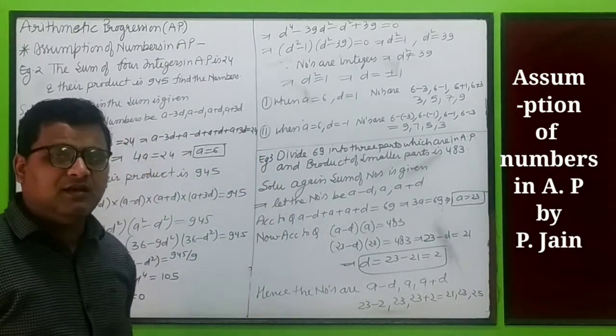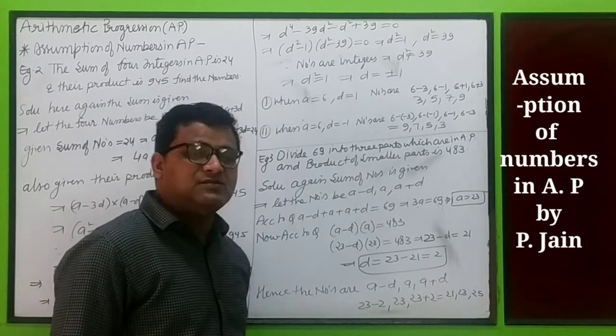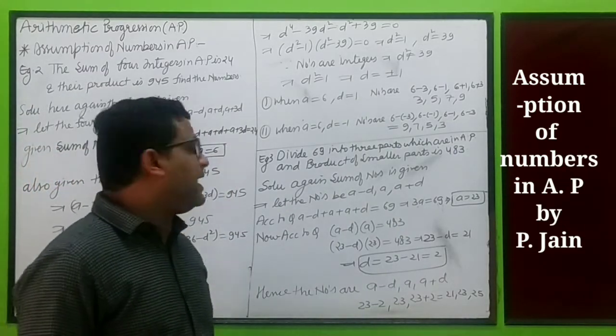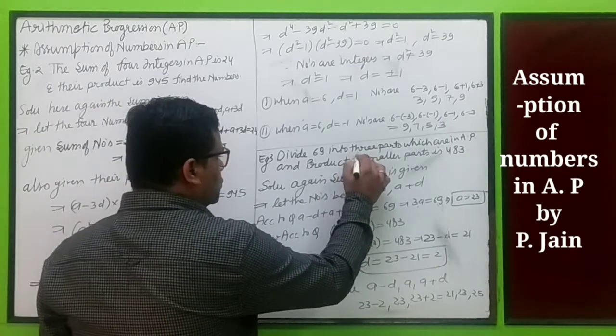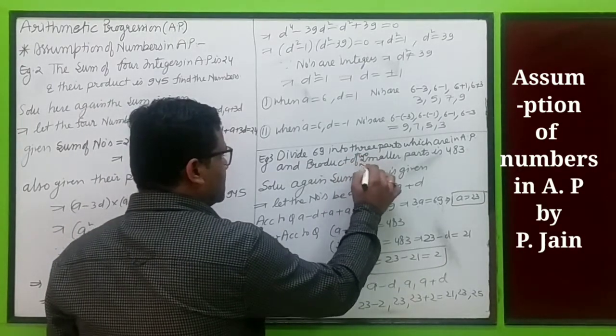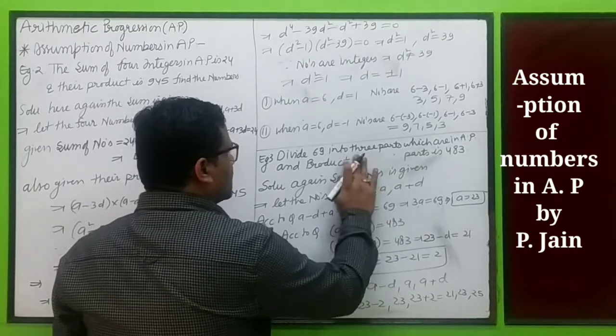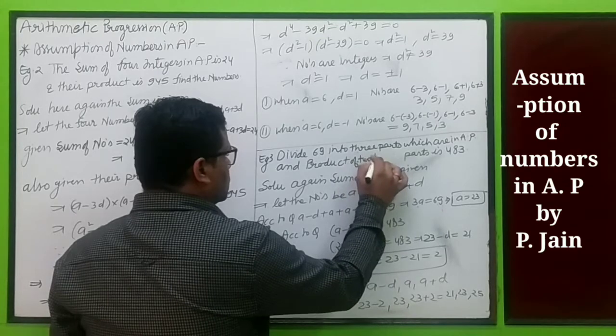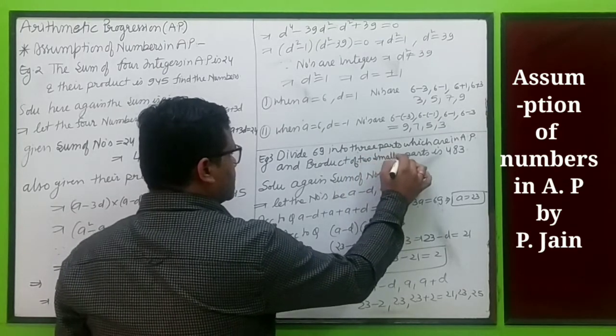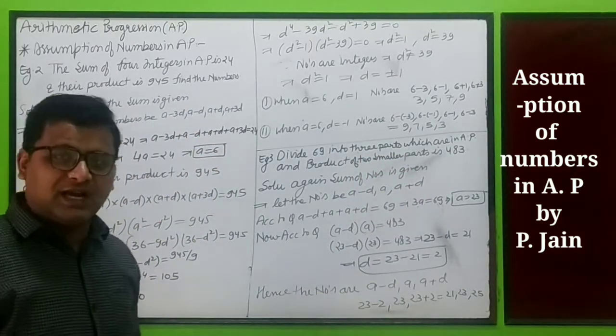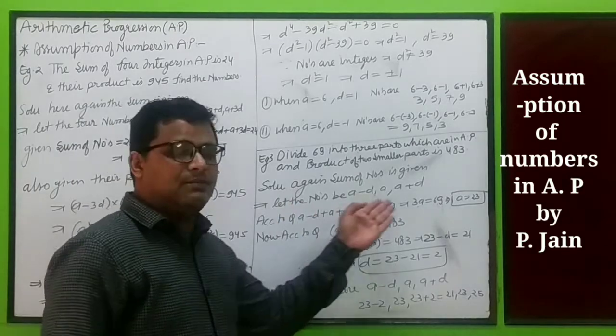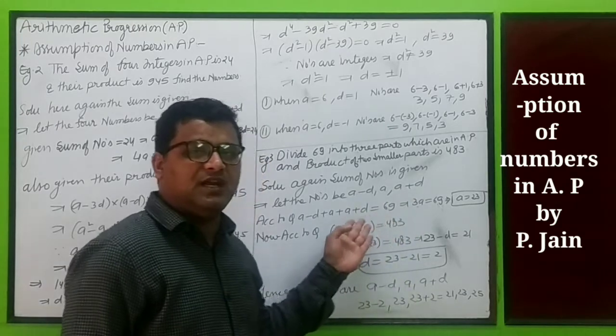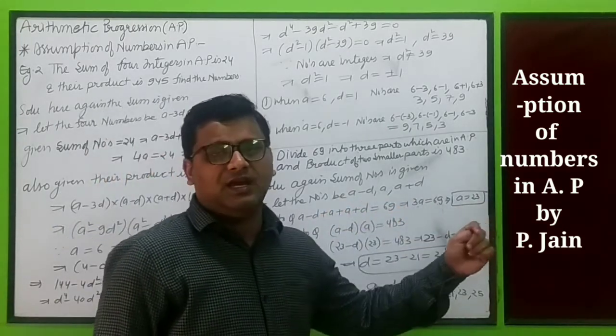Example three: divide 69 into three parts which are in AP such that the product of two smaller parts is 483. Again the sum is given, so let the numbers be a minus d, a, and a plus d. Sum is given as 69, so d cancels and 3a equals 69, giving a equals 23.